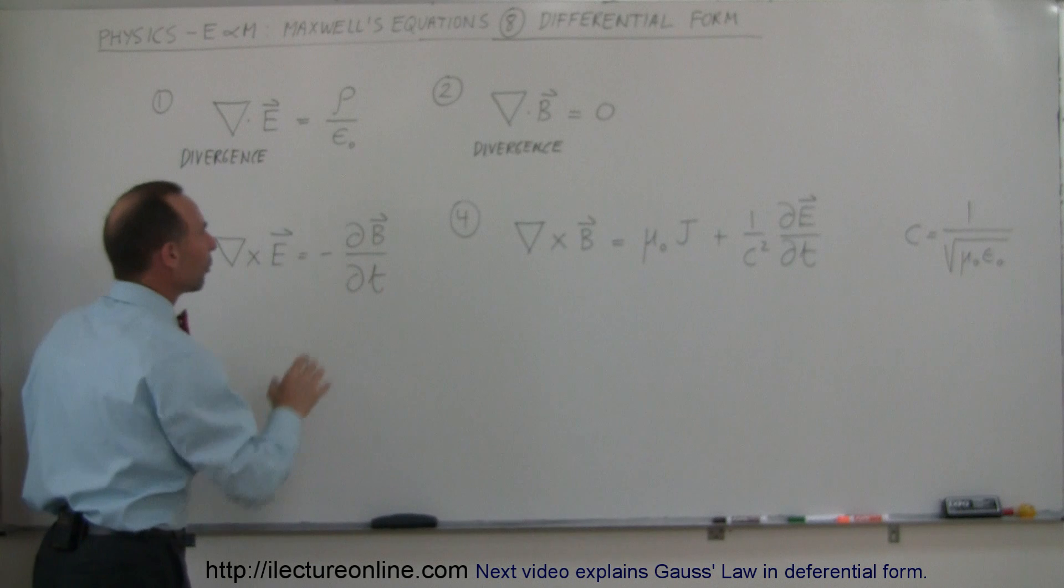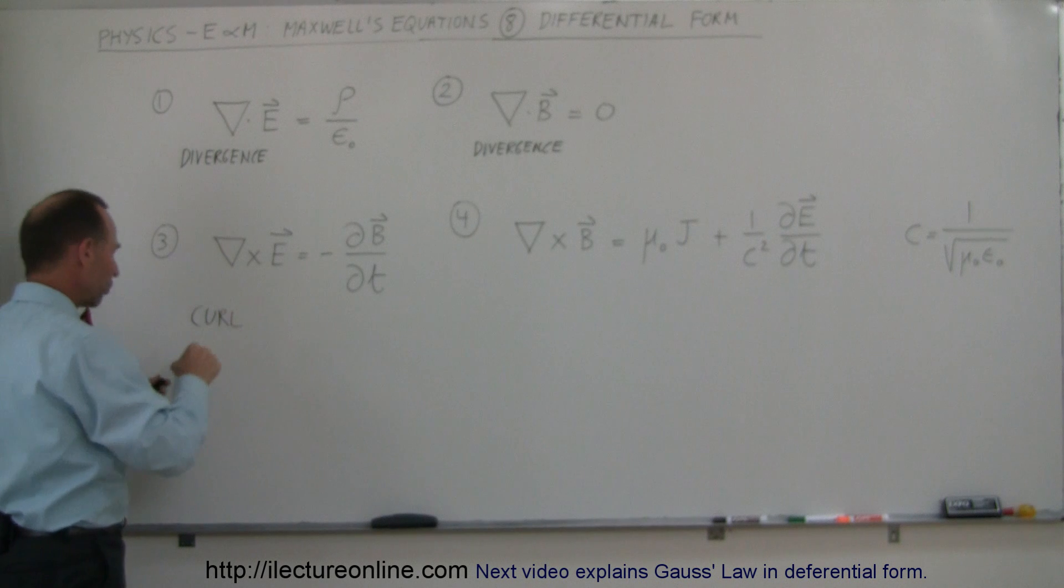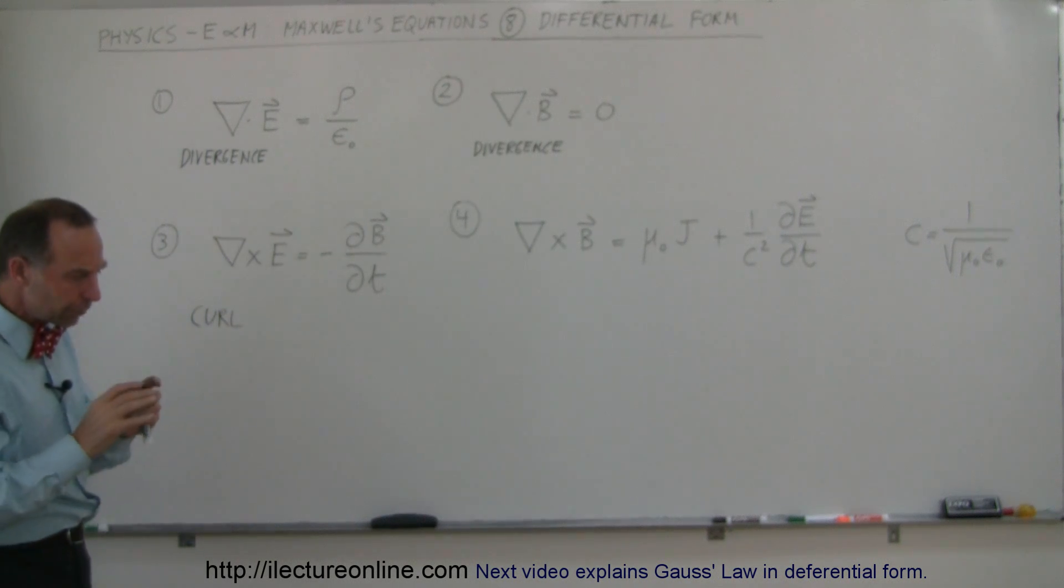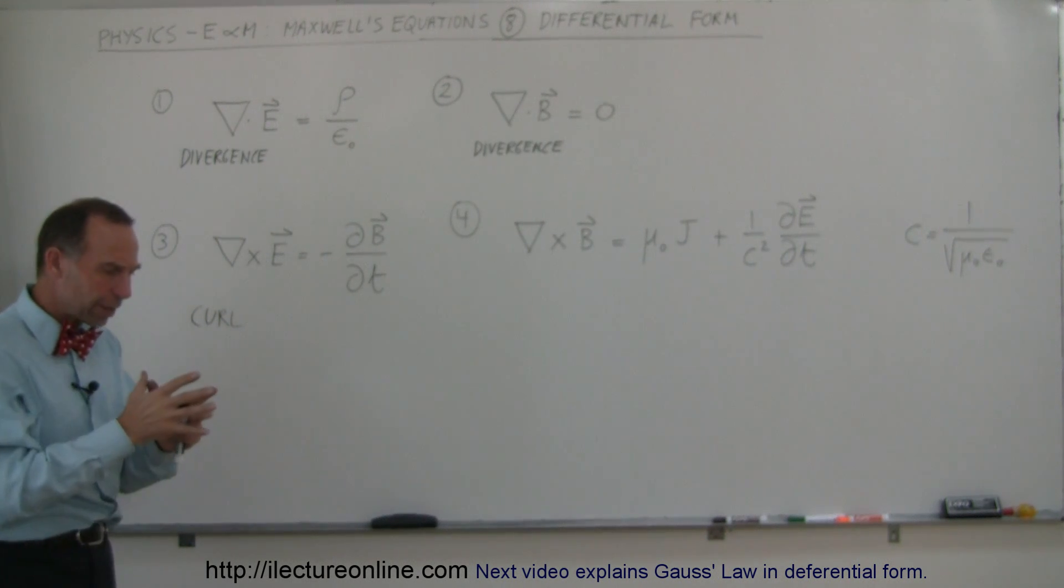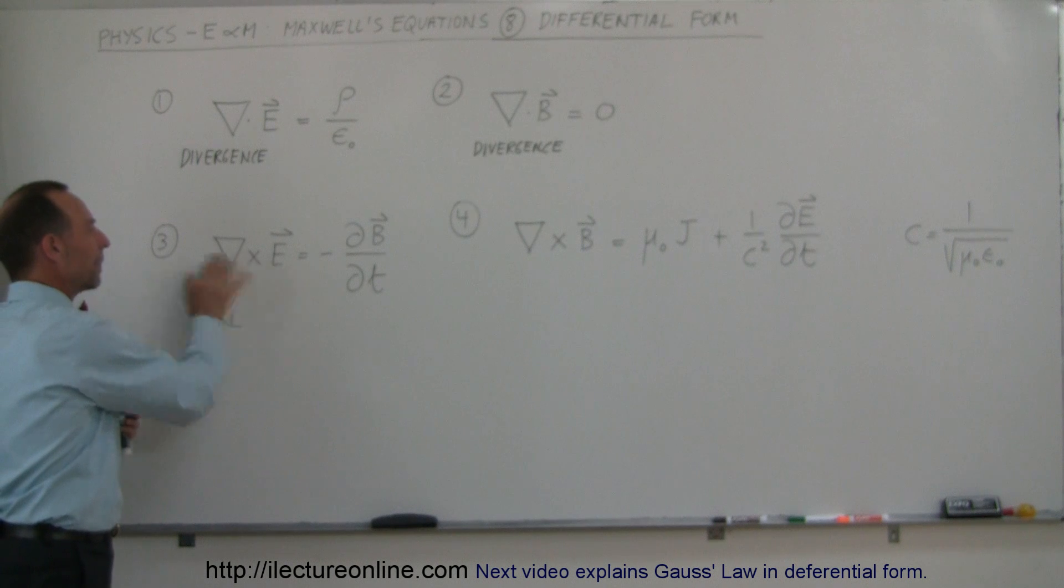Then the third and fourth equation instead of using the divergence we use what we call the curl. Now the curl is like a cross between taking a cross product and integrating around a circular path. So we will see later mathematically how we do that but again the idea is the same.